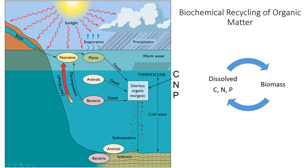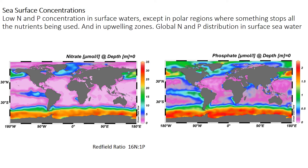Nutrients are constantly being removed by plants, although they're being added by other processes — either runoff from the continents, maybe production in situ, or upwelling of deep water that's got enriched nutrients because organic matter is decaying in that deep water and nutrients are being added back to it. Here we can see concentrations in micromolar of nitrogen on this side and phosphorus on this side.